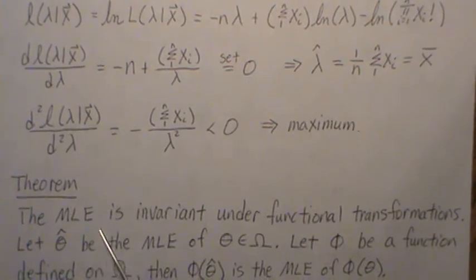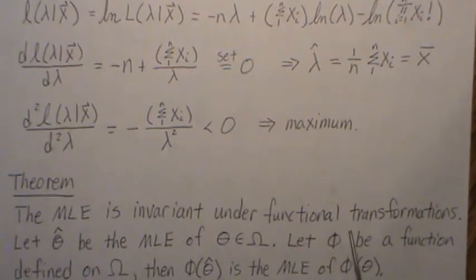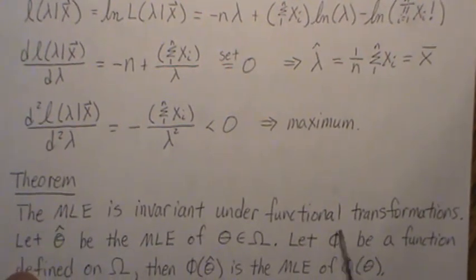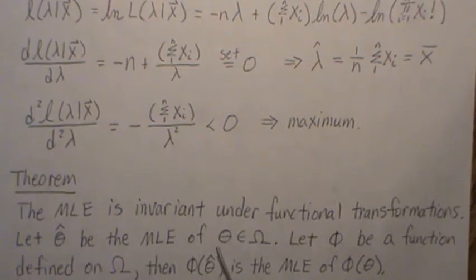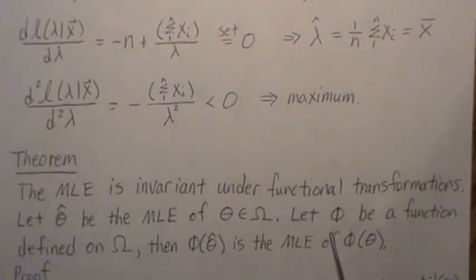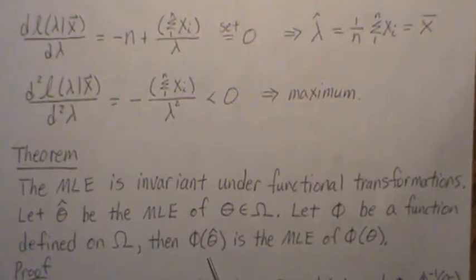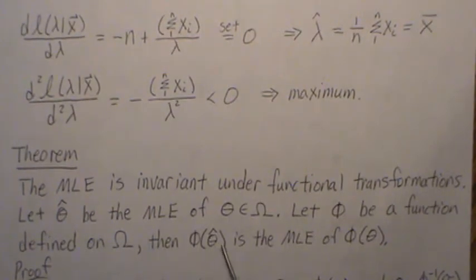The next theorem I find quite intriguing: the maximum likelihood estimator is invariant under functional transformations. Let theta hat be the MLE of theta in parameter space omega, and let phi be a function defined on omega. Then phi of theta hat is actually the maximum likelihood estimator of the function phi of theta.